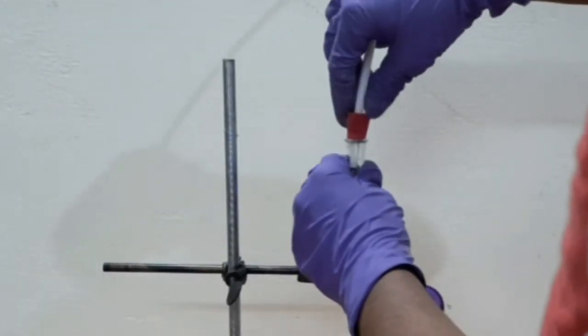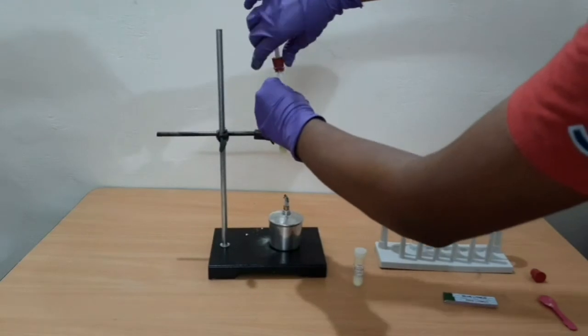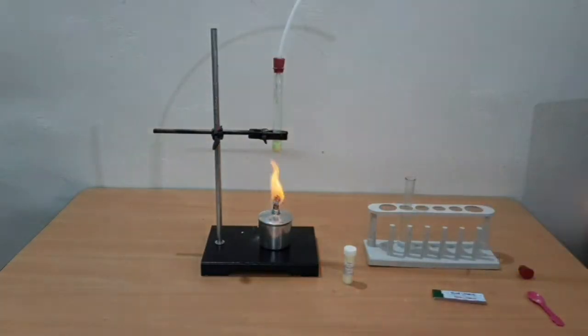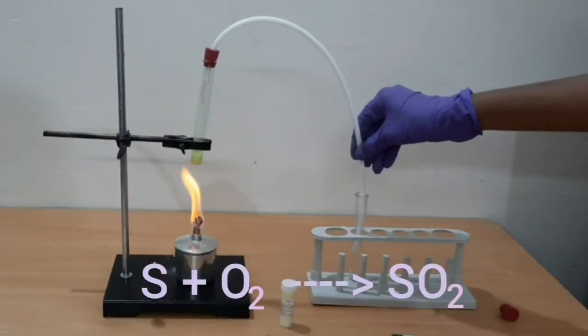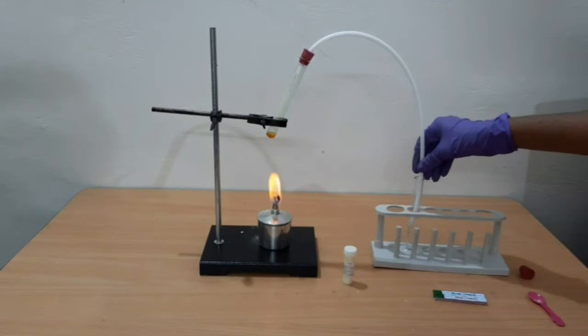Close the test tube containing sulfur powder with a cork fitted with the rubber tube. Heat the sulfur powder over a spirit lamp. Sulfur when heated combines with oxygen to form sulfur dioxide. Observe the fumes of the sulfur dioxide coming out of the test tube.